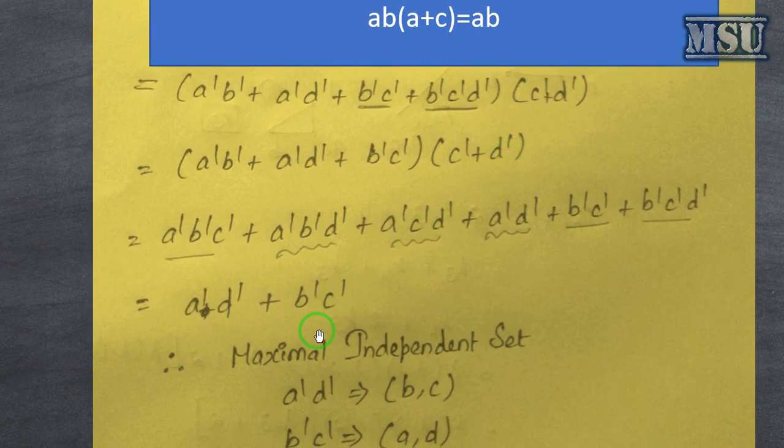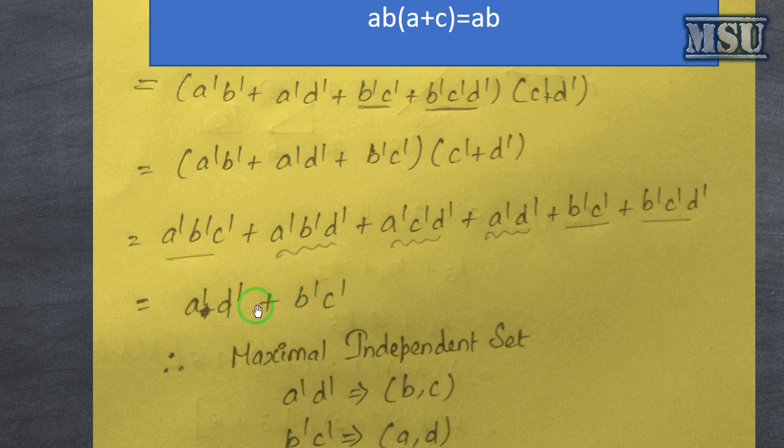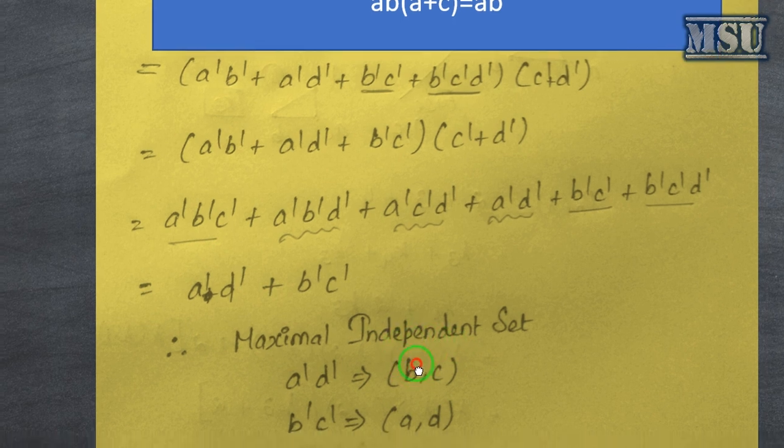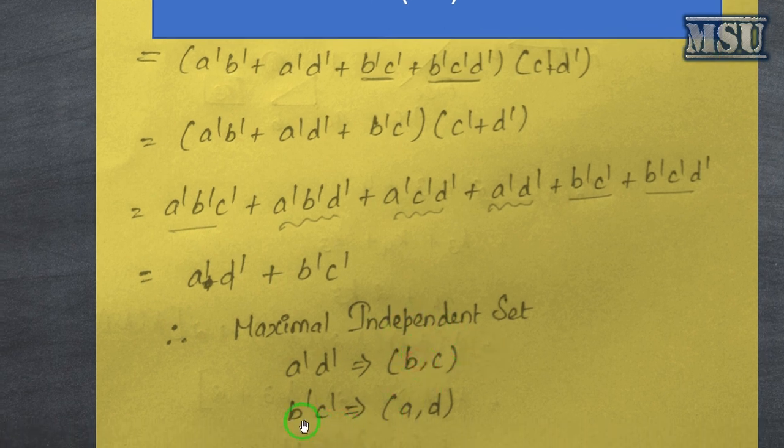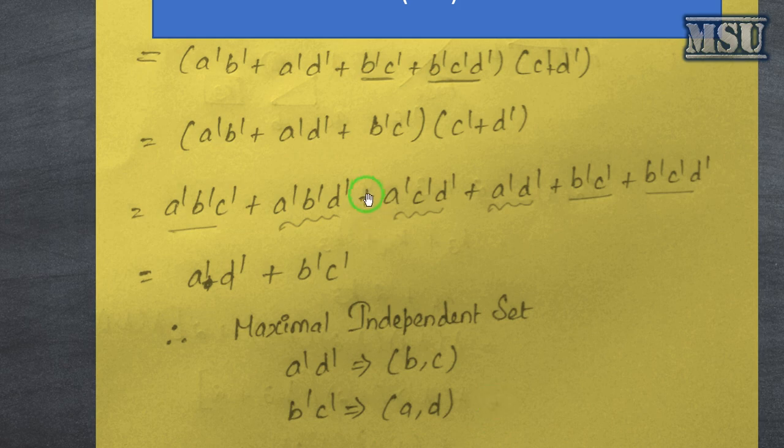At last we are getting the equation as a'd' plus b'c'. So a' is not occurring, d is not occurring means we are having another two vertices are there, b, c is one independent set, and a, d is another independent set.